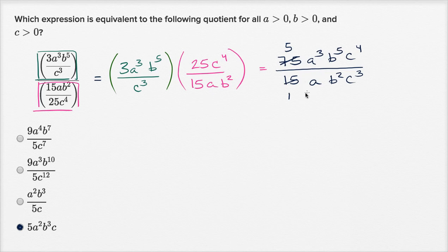But I could continue to simplify. If I divide a to the third by a, this becomes a squared, this becomes one. B to the fifth divided by b squared, that's going to be b to the third power. This is going to be one. C to the fourth divided by c to the third, that's just going to be c. C to the third divided by c to the third is just one. So you get five a squared b to the third c, which is exactly what you have here.